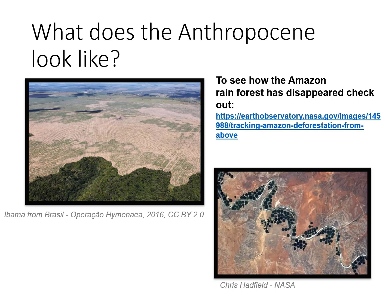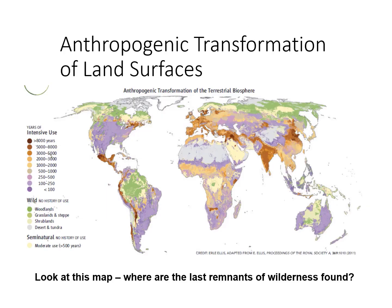Use these images to think about and describe how humans have altered Earth's spheres and its climate system. This map shows how much of the Earth's land surface we have modified by clearing forests, removing rock, and building cities. Where can you find the last remnants of Earth's wilderness? Despite being wild, how do you think these areas are being affected by humans?